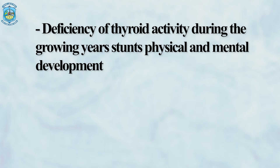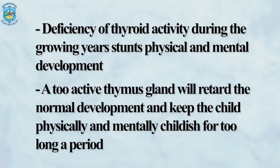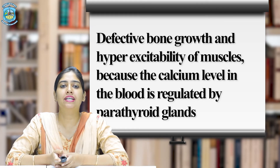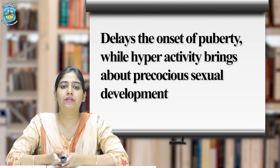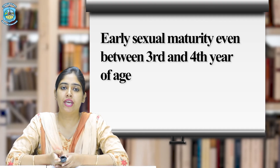Glandular system: Endocrine glands secrete hormones — chemical substances which affect growth, development and health of an individual. Hormones regulate the rate and pattern of development, functioning of all internal organs and the brain. Deficiency of thyroid activity during the growing years stunts physical and mental development. A two-active thymus gland will retard normal development and keep the child physically and mentally childish for too long a period. Deficiency in the secretion of the parathyroid gland results in defective bone growth and hyper-excitability of muscles, because the calcium level in the blood is regulated by parathyroid glands.